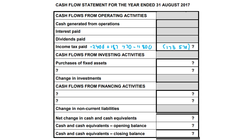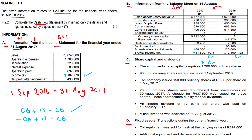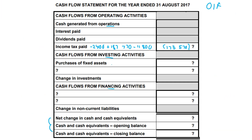Income tax paid is an outflow — money going out of the business — so that gives us 173,570 in brackets. That covers everything from operations. Remember it as OIF: Operating, Investing, Financing, then your cash and cash equivalents amounts at the end. Next: cash flows from investing activities.